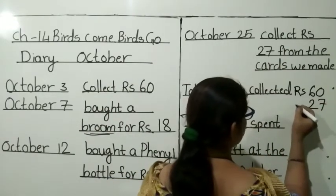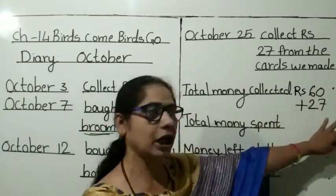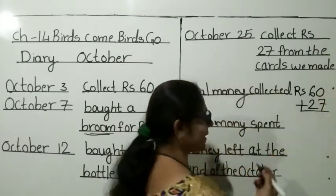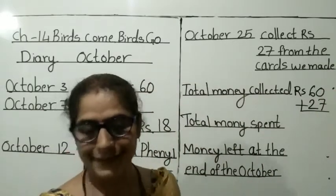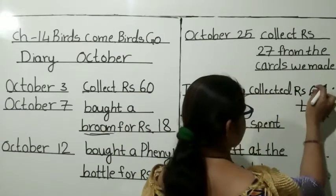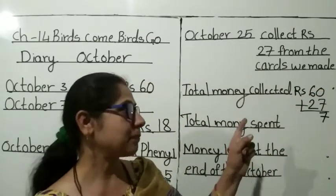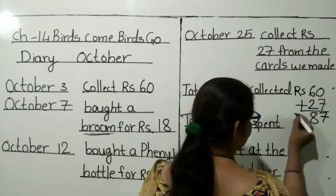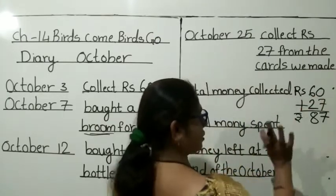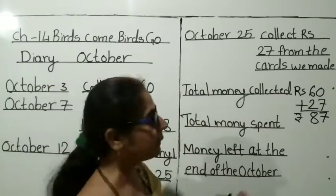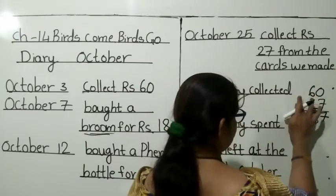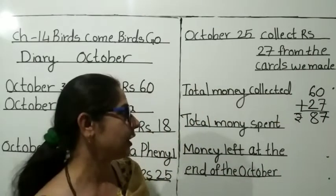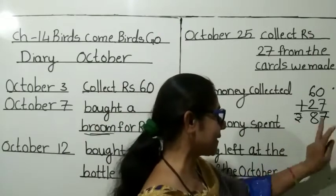What you have to do here? Plus. Do numbers ko plus karna chahiye. Zero plus seven — how much, student? Seven. Then, six plus two — how much? Eight. Rupees kitne hoa here? Rupees 60, rupees 27 — add karenge to rupees 87 aaya hai.